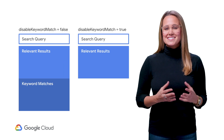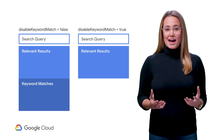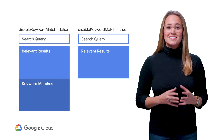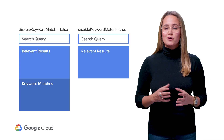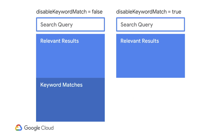The next property is Disable Keyword Match, which is another binary property that tells the search request to return additional jobs through keyword matching. When set to false, additional job matches that aren't deemed relevant by the ML algorithm but do match the search query string get returned. Just like with Enable Broadening, Disable Keyword Match defaults to false, and any additional results will appear lower than those most relevant.